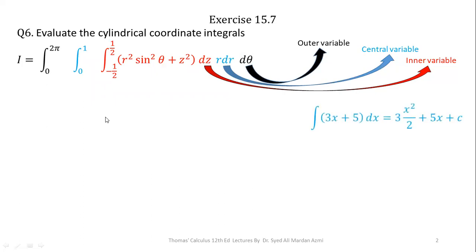Before starting this question, we must revise a small example from single variable calculus. If we had to integrate 3X plus 5 with respect to X, we keep 3 as it is and integrate X as X squared over 2, plus the integration of 5 is 5X plus C. There are two types of constants involved: 3, which is multiplied and remains as is, and 5, which is free from the variable — for that, we write down the variable with respect to which we are integrating.